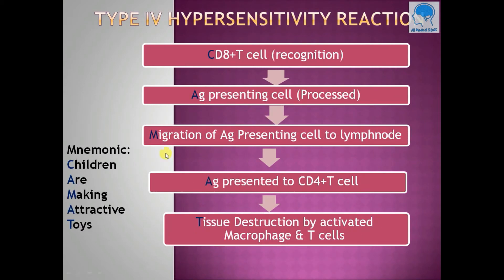Now type 4 hypersensitivity reaction. We can remember all these steps by using a simple mnemonic: 'CHILDREN ARE MAKING ATTRACTIVE TOYS.' Here C stands for CD8+ T cell, A stands for antigen presenting cell, M stands for migration of antigen presenting cell to lymph node.